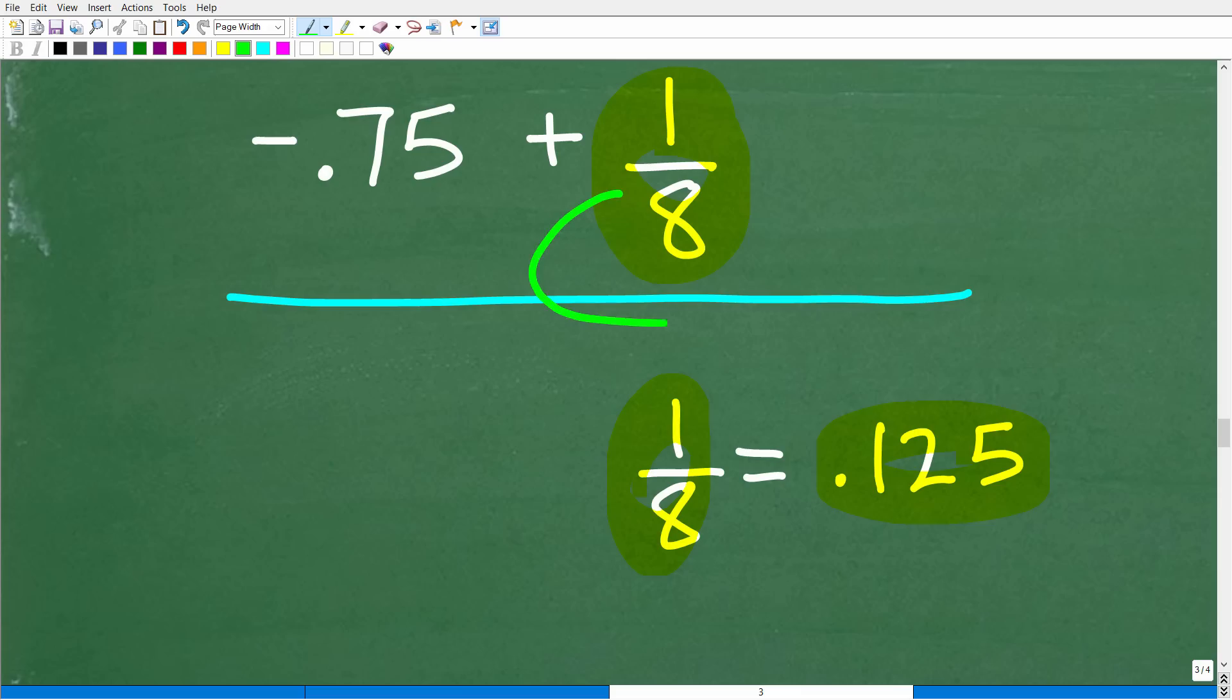But how do we change a fraction into a decimal? Well, we have to do the division. So we have one divided by eight. So we have to do this problem here. Okay. So when we do this division problem, we're going to end up with the decimal point one-two-five.